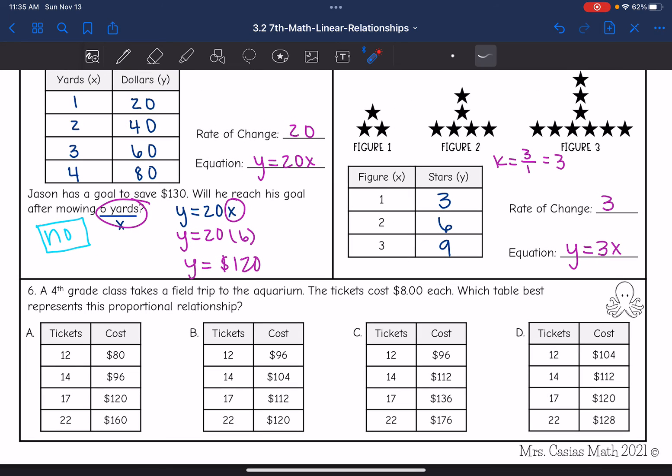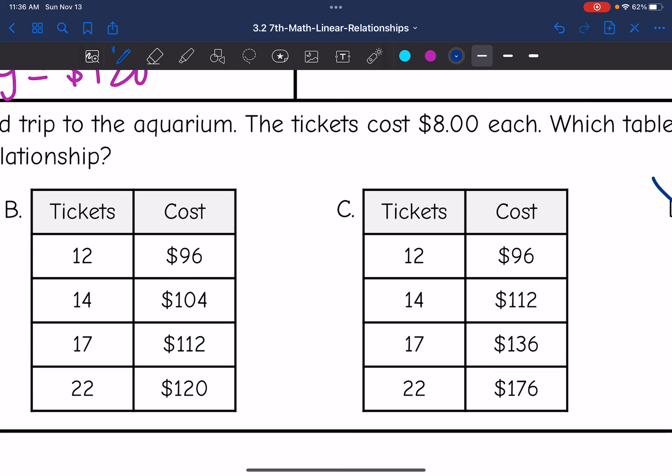Last one says a 4th grade class takes a field trip to an aquarium. Tickets cost $8 each. Which table best represents this proportional relationship? That means I should see that multiplicative relationship of the number of tickets times 8 to get the cost. I noticed that all of these tables start with 12, and 12 times 8 is $96. So I can cross out table A and table D because they do not have the correct amount for 12 tickets. Table B and C have the correct amount for 12 tickets.